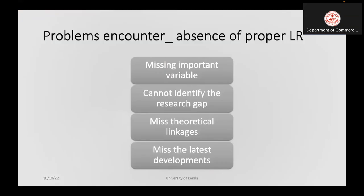There are problems encountered by researchers due to the absence of proper literature reviews. The first one is missing important variables. Sometimes they are not organizing their literature review properly and the main variable may be missed. After questionnaire setting, analysis, and findings, they realize they missed an important variable, which becomes a bottleneck of their study.